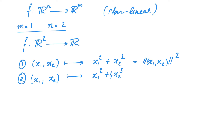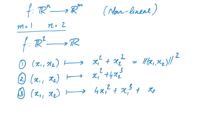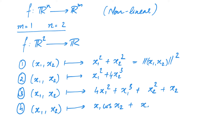Instead, we could take higher powers like cubes or fourth powers, and a function taking (x₁, x₂) to x₁² + x₂³ is also non-linear. We can also add constants to get x₁² + 4x₂³, which is still non-linear. In general, it can be any polynomial in x₁ and x₂. Another example is the function taking (x₁, x₂) to 4x₁² + x₁³ + x₂² + x₂. We need not restrict to polynomials — we can also use trigonometric, exponential, and logarithmic functions. For example, the function taking (x₁, x₂) to x₁ cos x₂ + x₂ · eˣ¹.